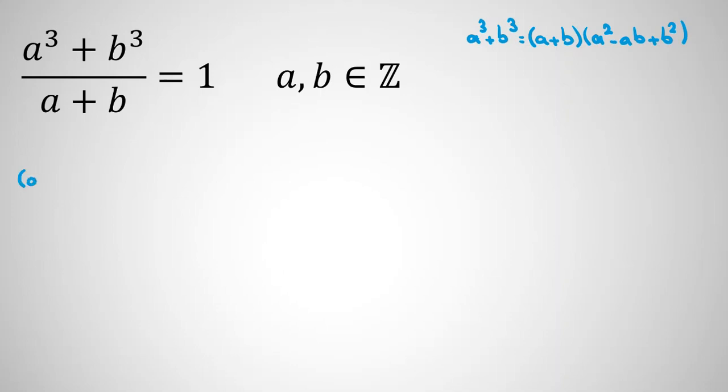Let's write the equation again. We factorize the numerator: A squared minus AB plus B squared all over A plus B equals 1.